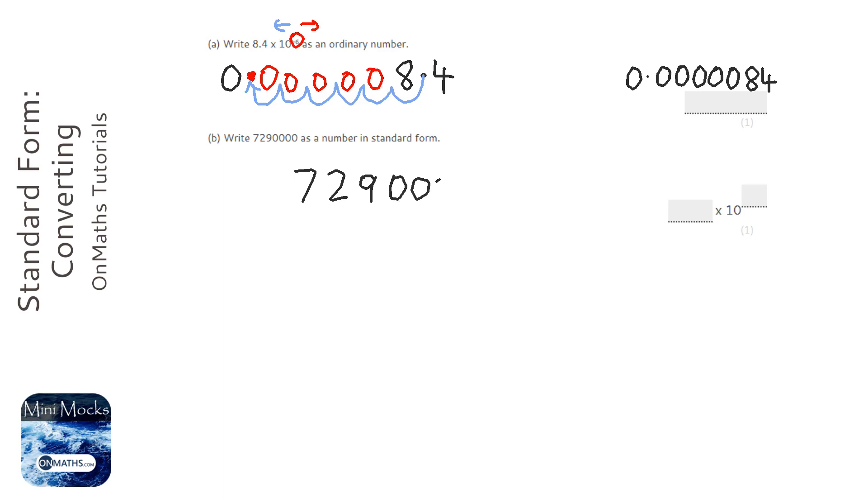Okay, to convert to standard form you write out the number and you try and put a decimal place in to make the number between one and ten, but not including ten.